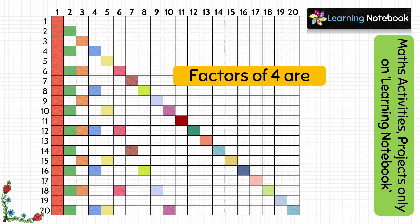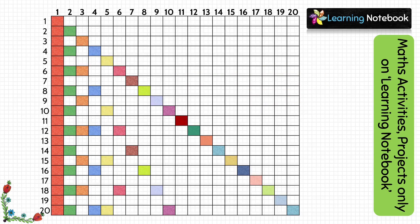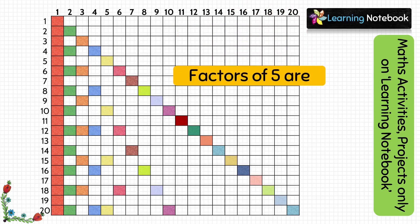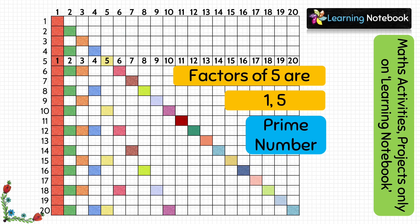Now we will look at row 4 to find factors of 4. Boxes 1, 2 and 4 are colored, so factors of 4 are 1, 2 and 4. Next, let us find factors of 5 — take a look at row 5. Boxes 1 and 5 are colored, so 1 and 5 are factors of 5. Since we have only 2 colored boxes, number 5 is a prime number.